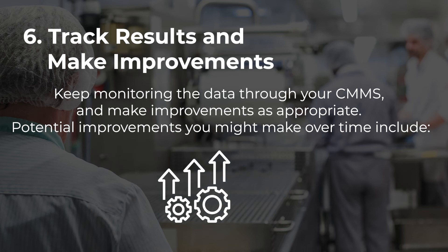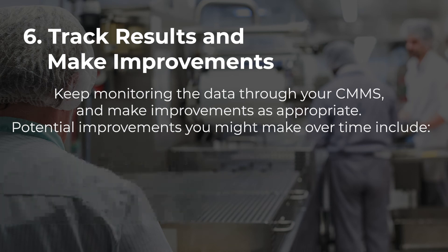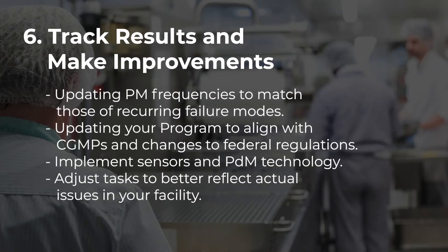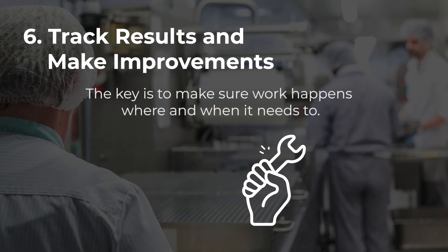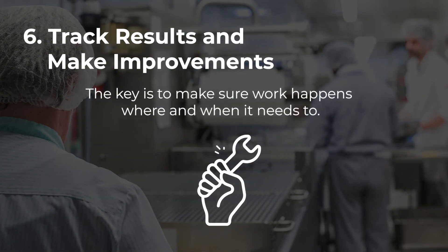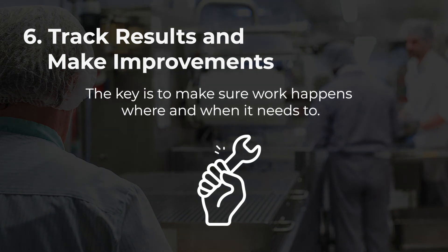Potential improvements you might make over time include updating PM frequencies to match those of recurring failure modes, updating your current program to align with current good manufacturing practices and changes to federal regulations, implementing sensors and predictive maintenance technology, and adjusting tasks to better reflect actual issues in your facility. The key is to make sure work happens where and when it needs to.